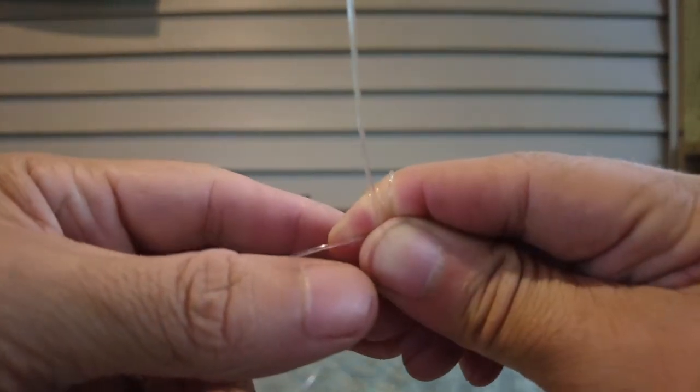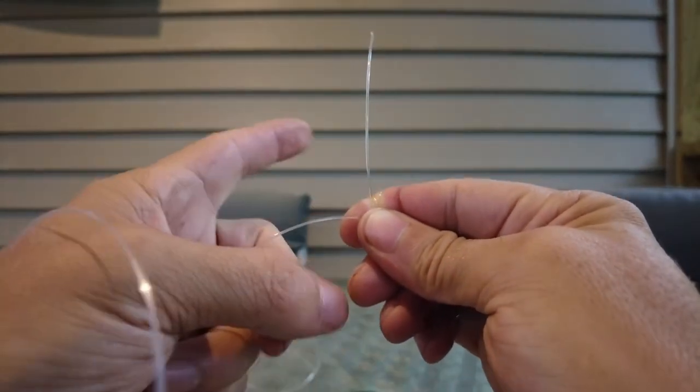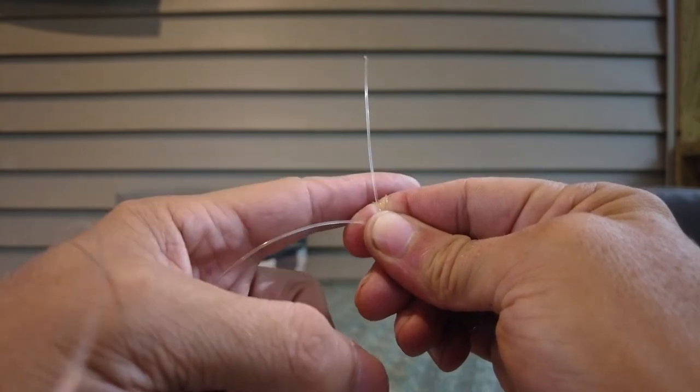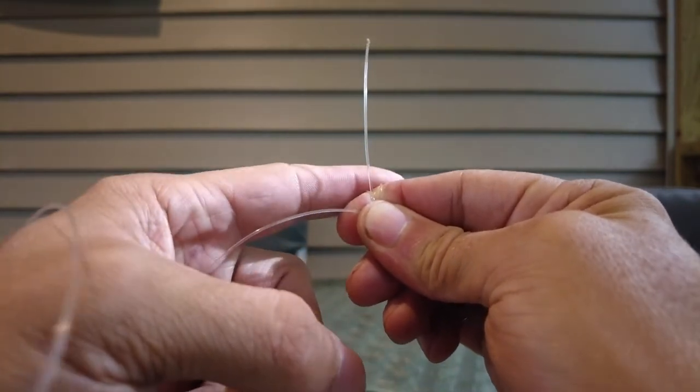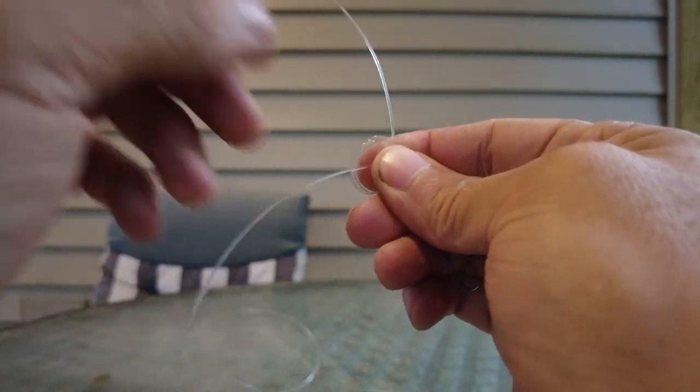So you can see we have three wraps. We're just going to take our finger without letting anything go. Keep pinching down. We're just going to slide those three wraps off of our finger.